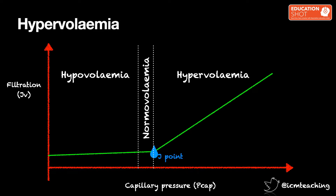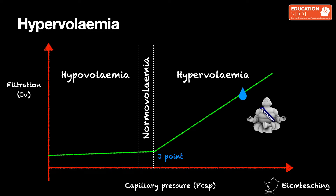What about if we infuse too much fluid and cause hypervolemia? Here the J-point can be exceeded enough to overwhelm lymphatic return and oedema results.